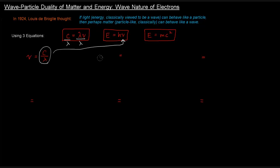Plugging C over lambda in for nu gives us energy equals H times C over lambda. Now we have E equals hc over lambda. From here, we're going to solve this equation for wavelength, which gives us lambda equals hc over E.